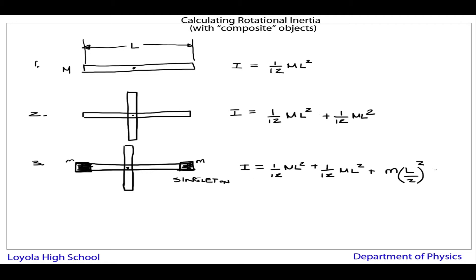So how far its center of mass is from the center, plus the other one, L over 2 quantity squared. So I'm just adding together the two propeller blades and each of the masses and their distances from the center of rotation.